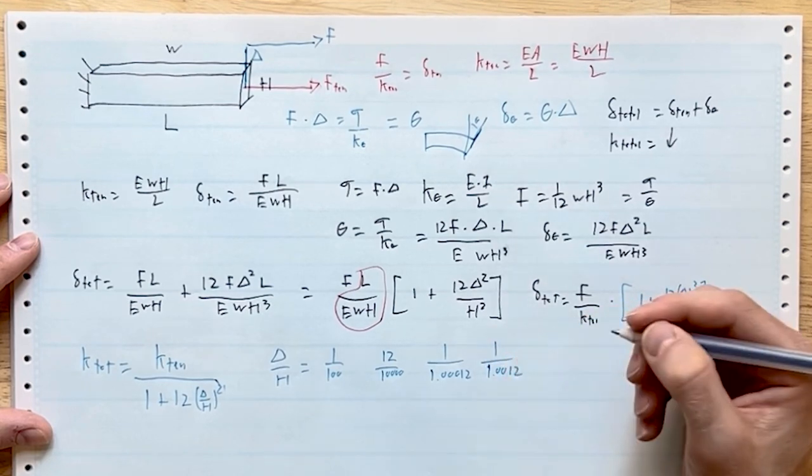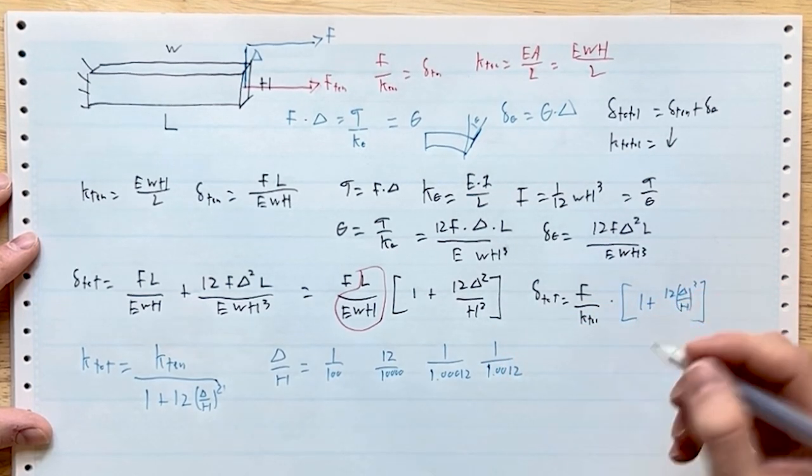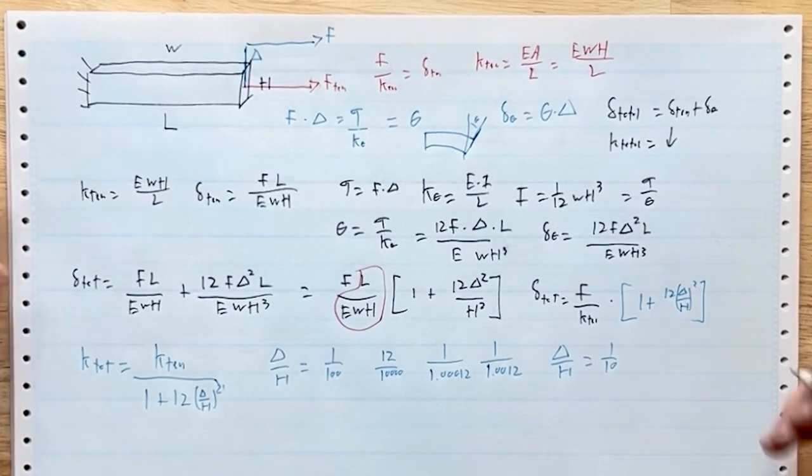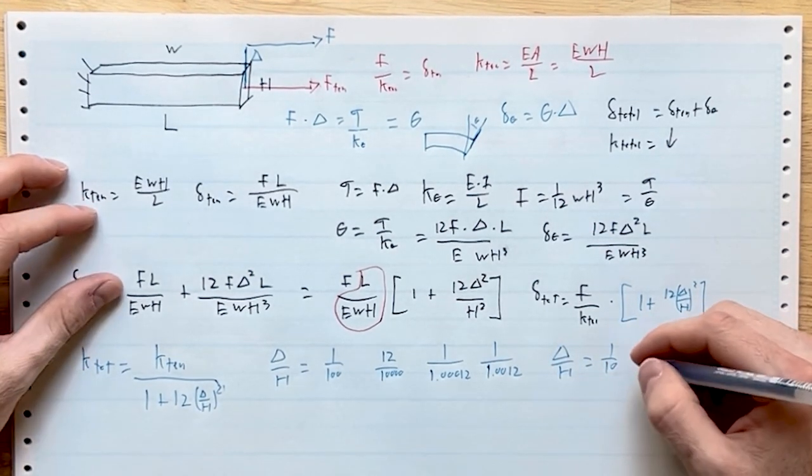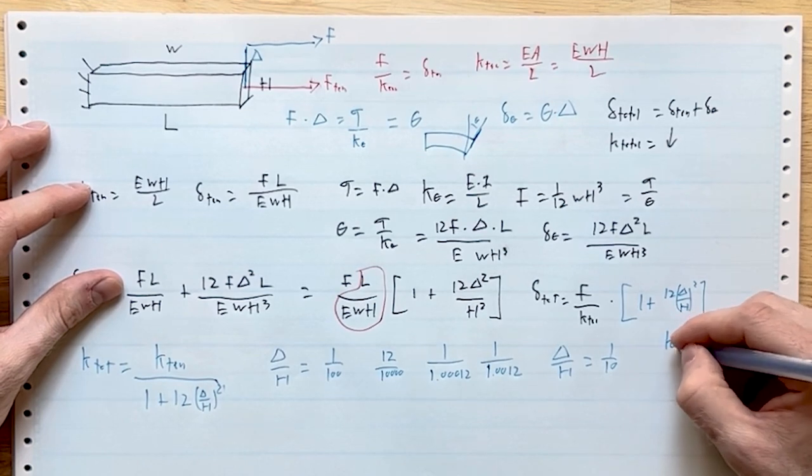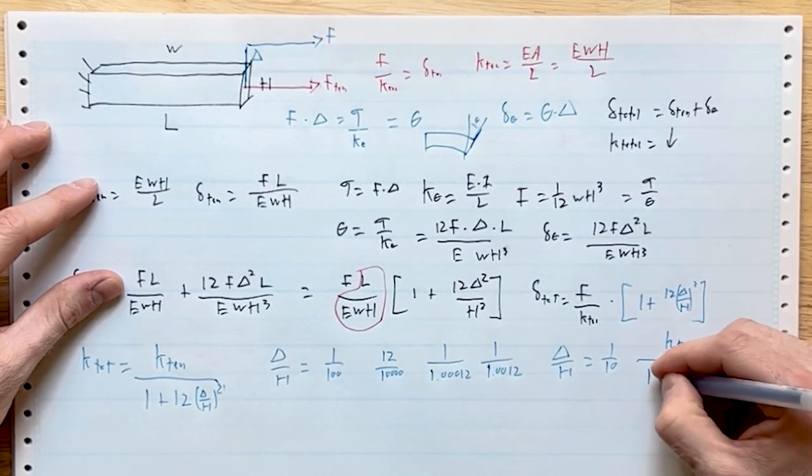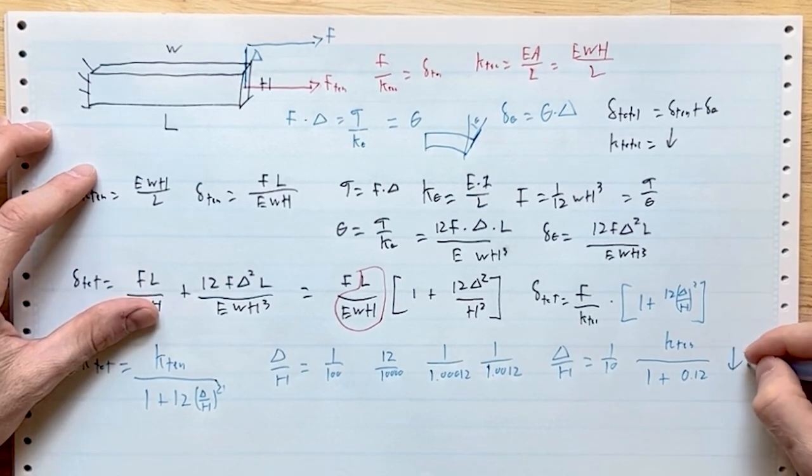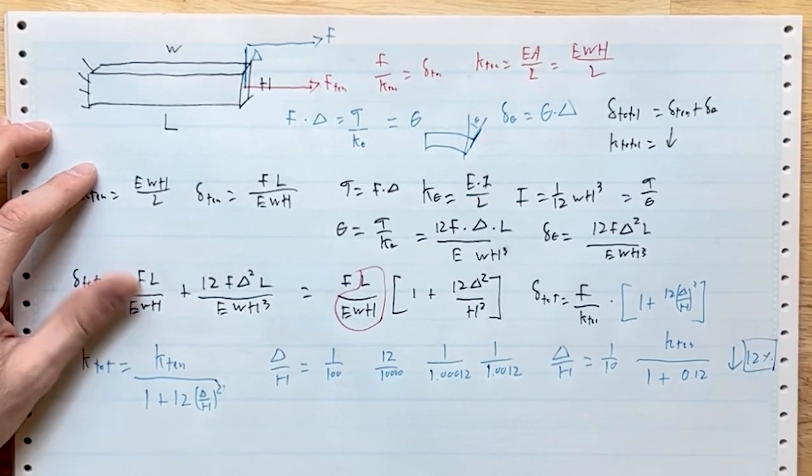Now let's go delta over h equals 1/10. You're still trying pretty hard here but you're struggling. So now we basically end up with k_tension divided by 1 plus 0.12. Oh, our stiffness just went down by 12%. You're going to notice that if you're designing a precision machine.